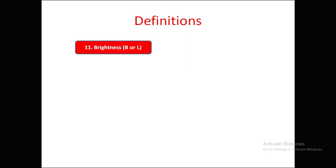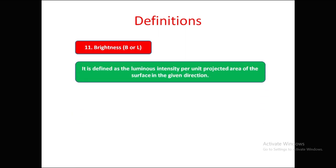The next definition is brightness, represented as capital L. It is defined as the luminous intensity per unit projected area of the surface in a given direction. The formula is: L = I / A (luminous intensity divided by apparent area).